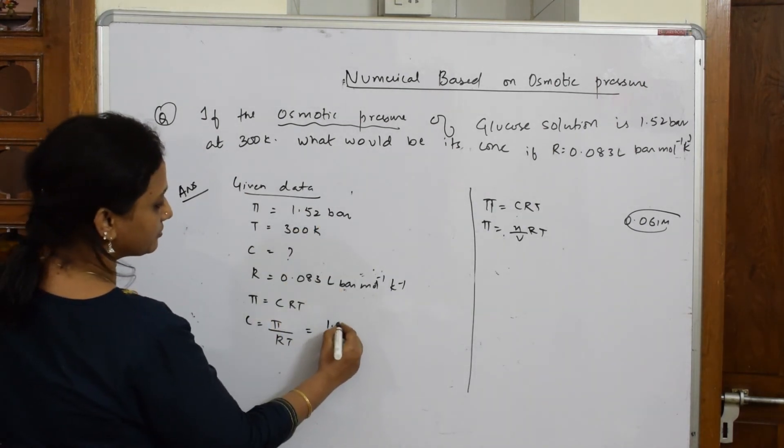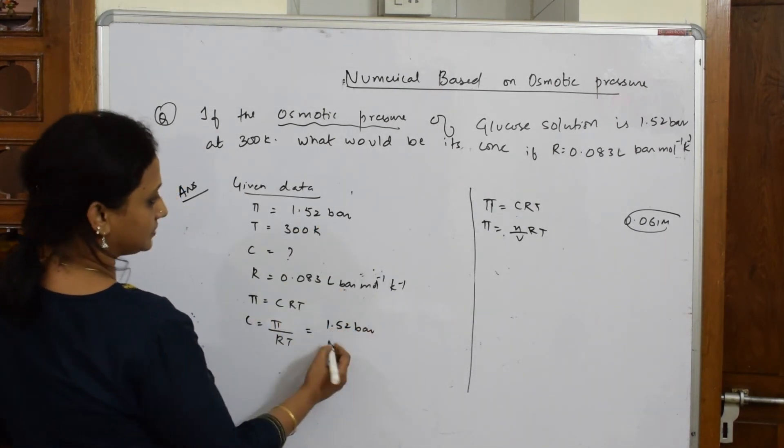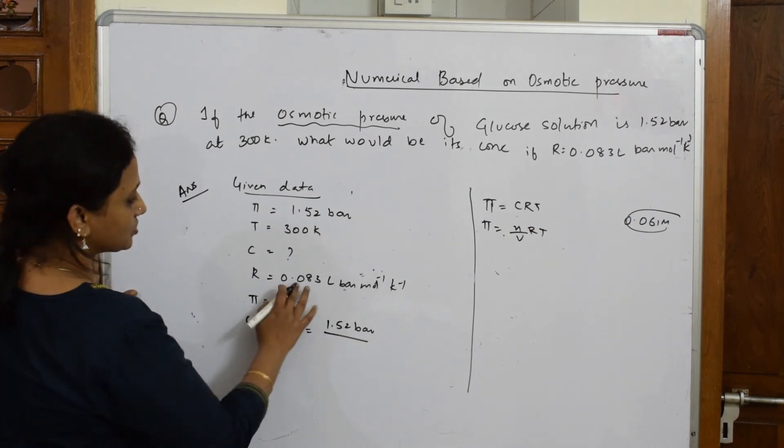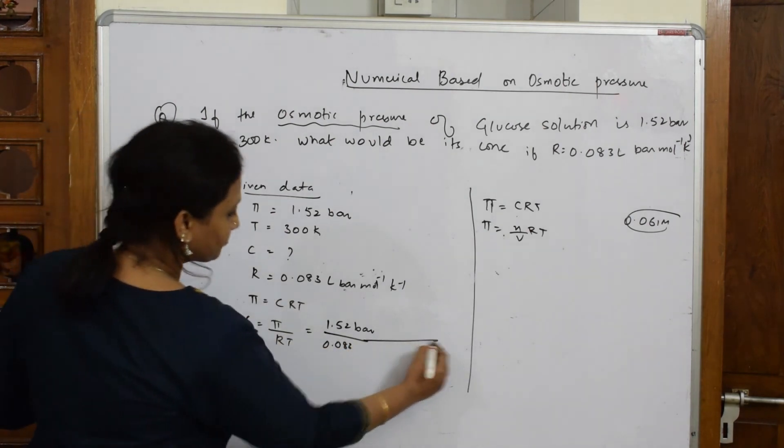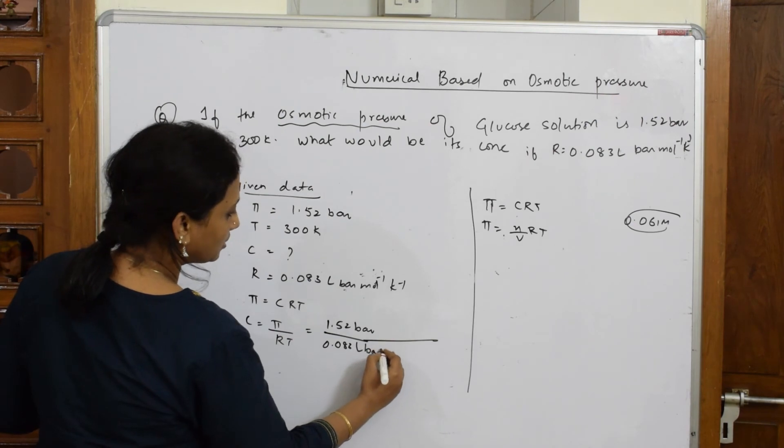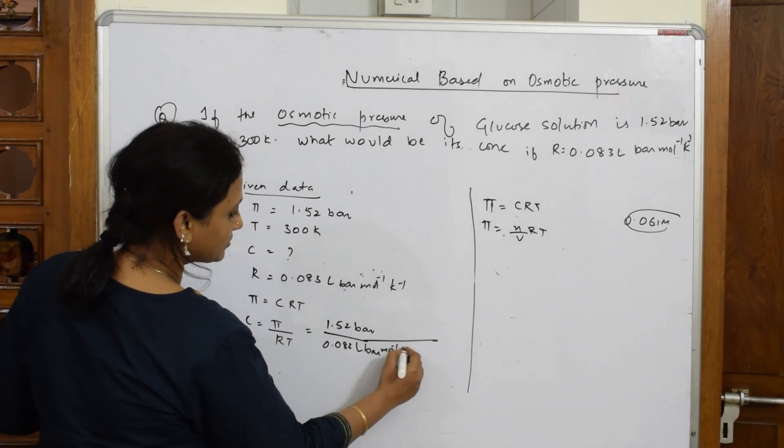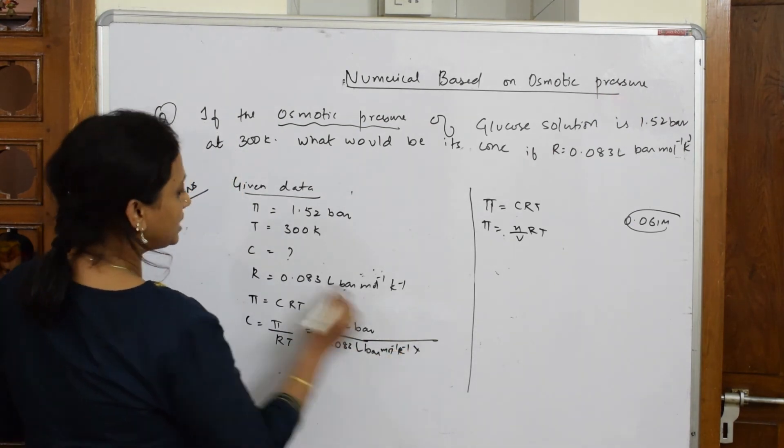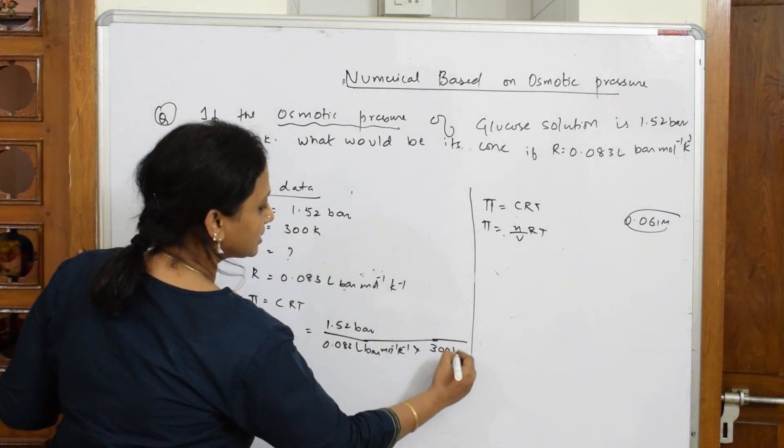π value is given as 1.52 bar, divided by R which is 0.083 L bar mole inverse Kelvin inverse, into T absolute temperature given to me is 300 Kelvin.